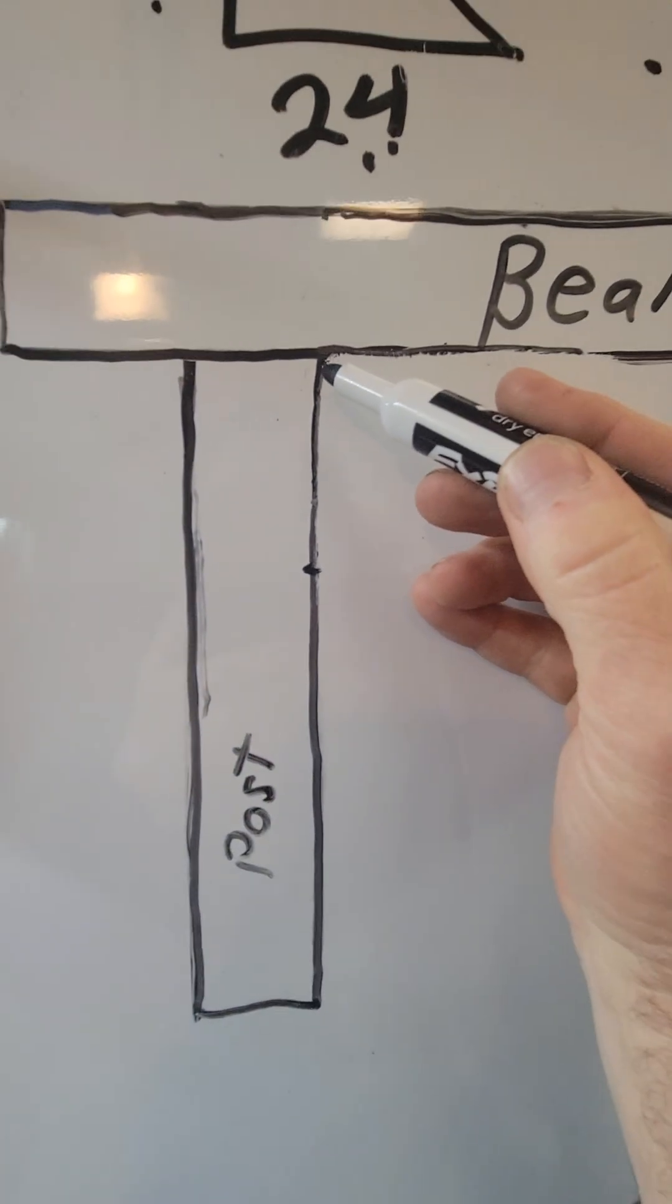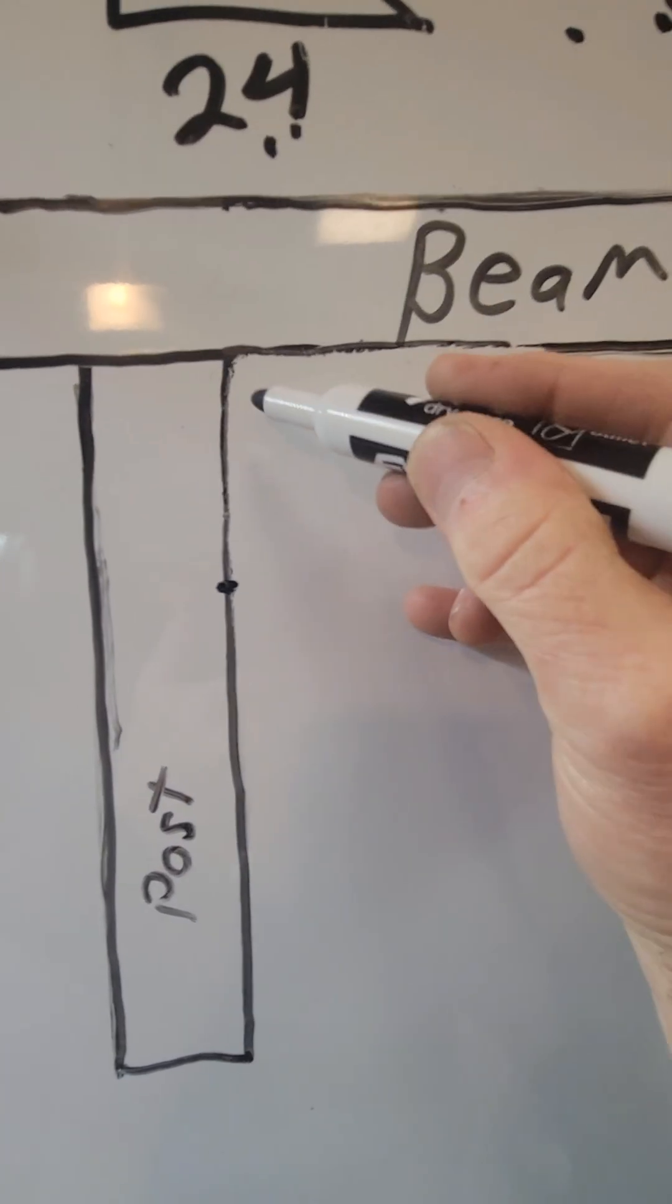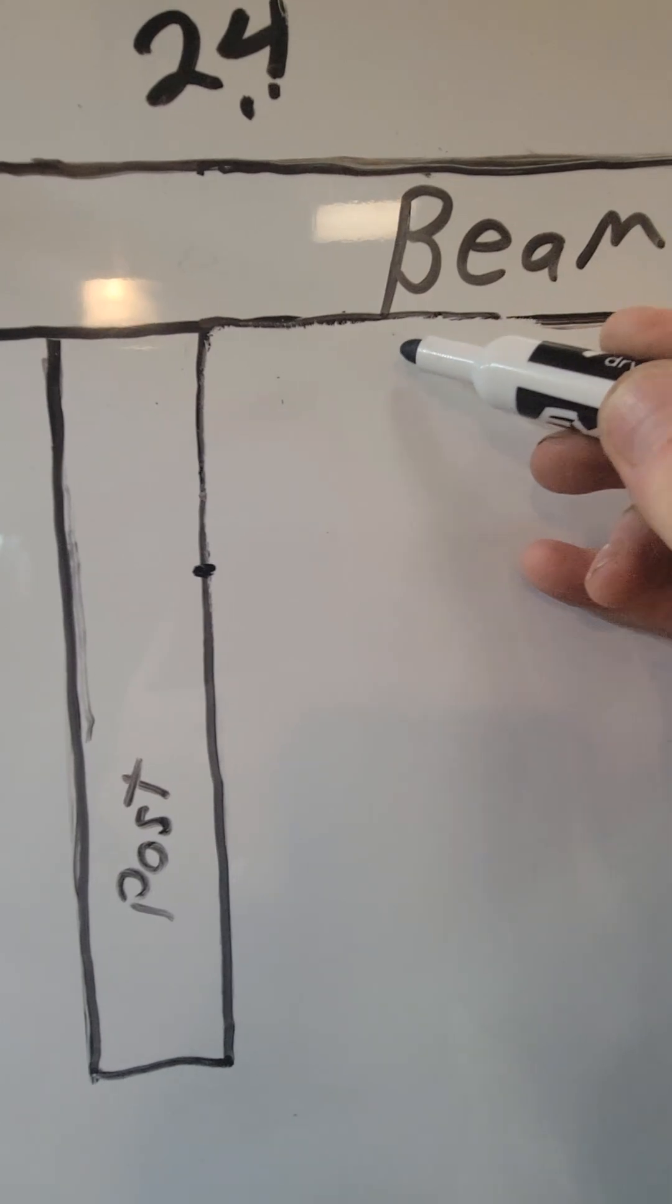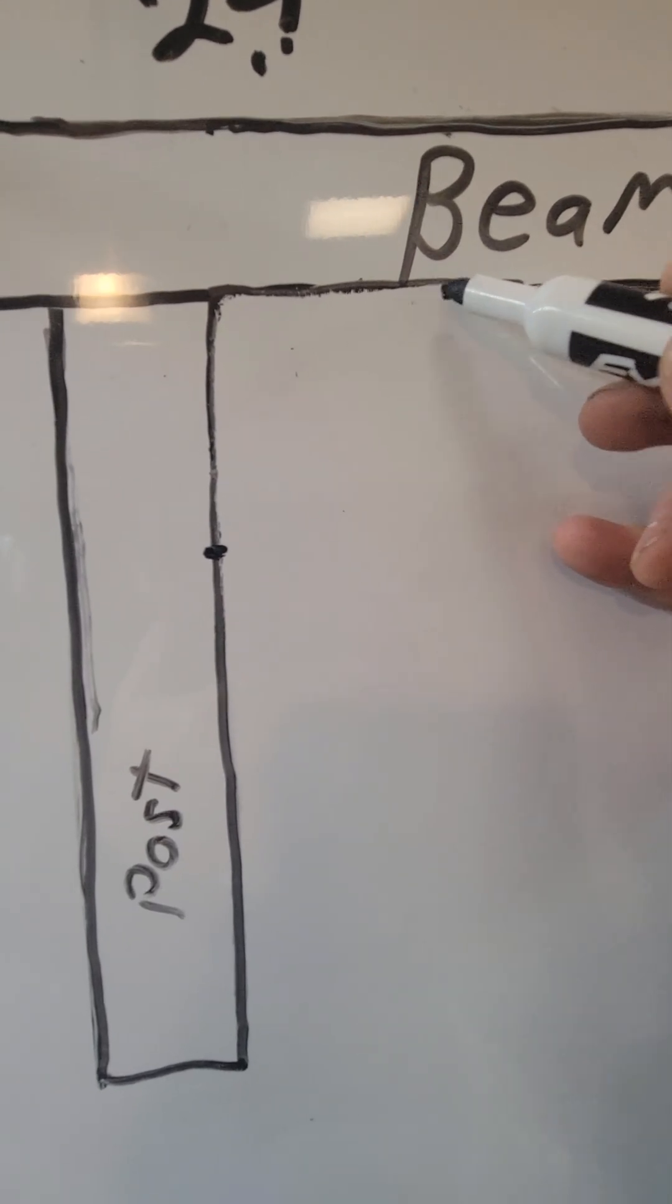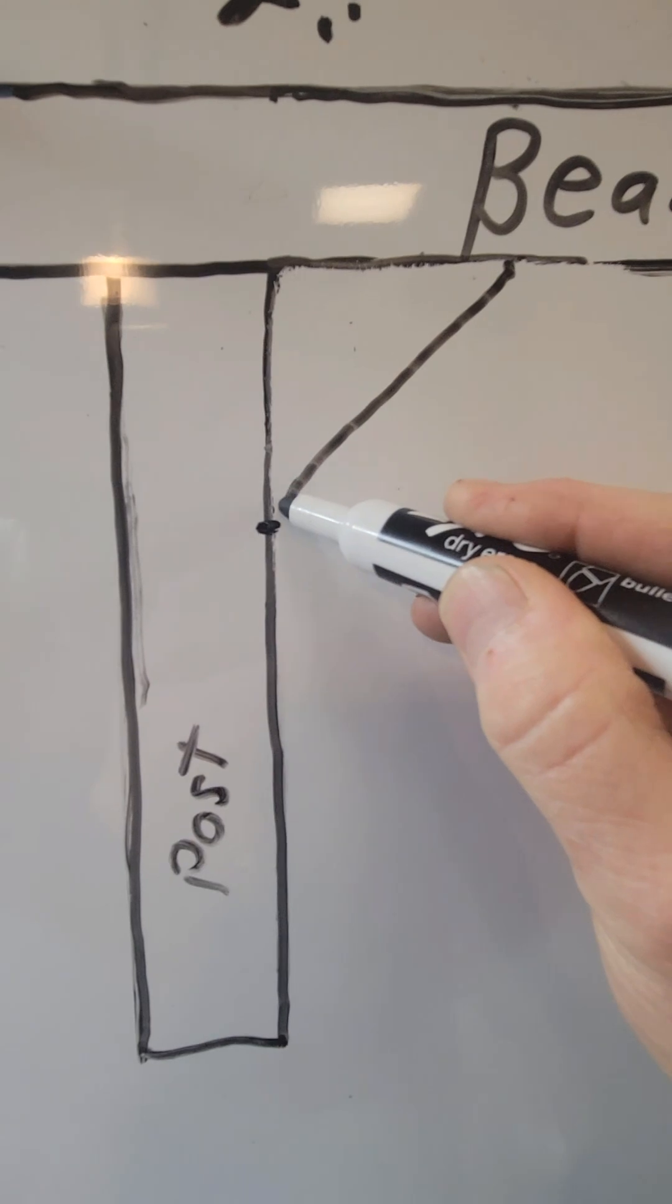So you would butt this beam right here, come down 24 inches right here, make a mark. You would butt the column right here, come across 24 inches.